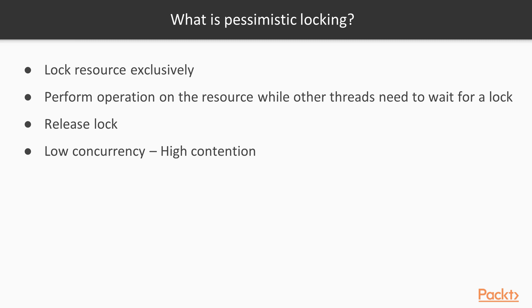What is pessimistic locking? When we have some code that accesses a shared variable or shared state, pessimistic locking is a strategy that locks the resource exclusively. If we have two threads, only one thread can access that resource exclusively. The other thread needs to wait for that resource while the thread holding the lock performs its operation.